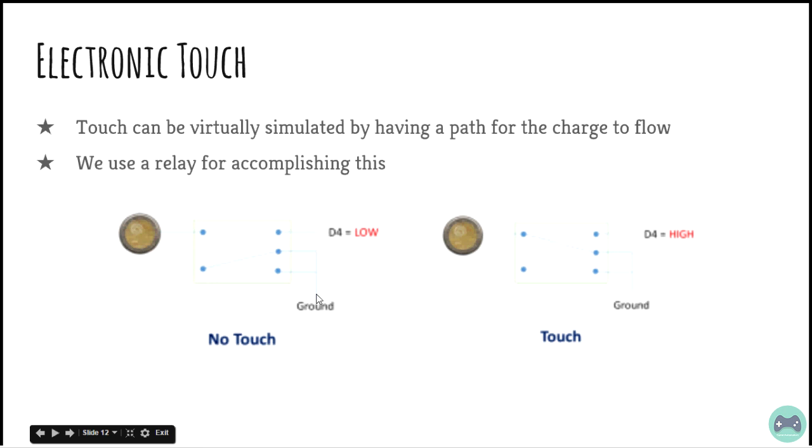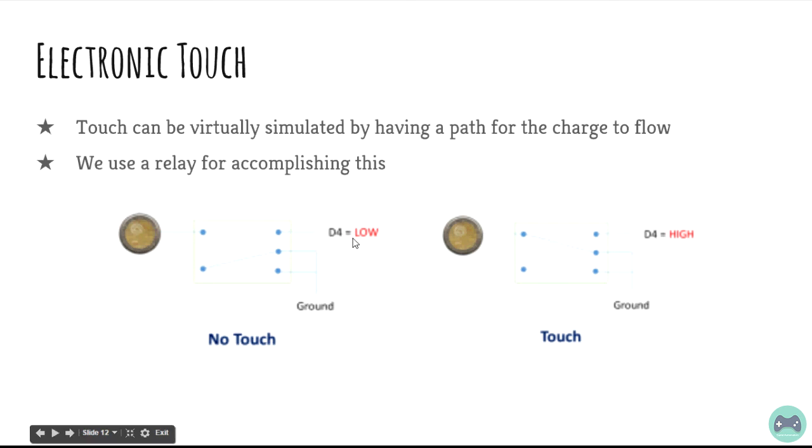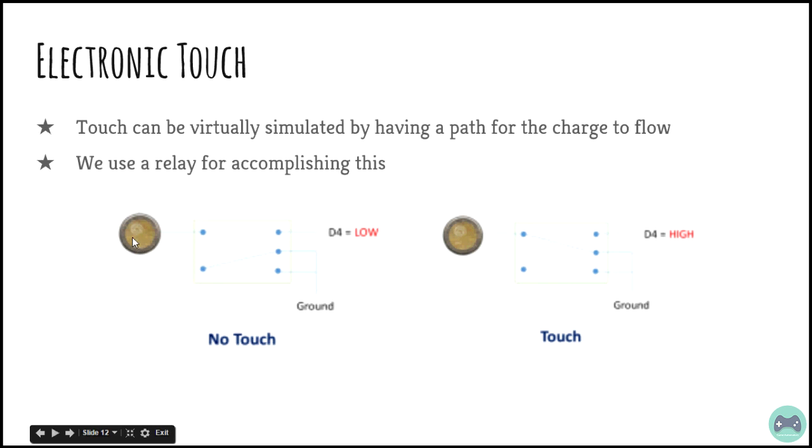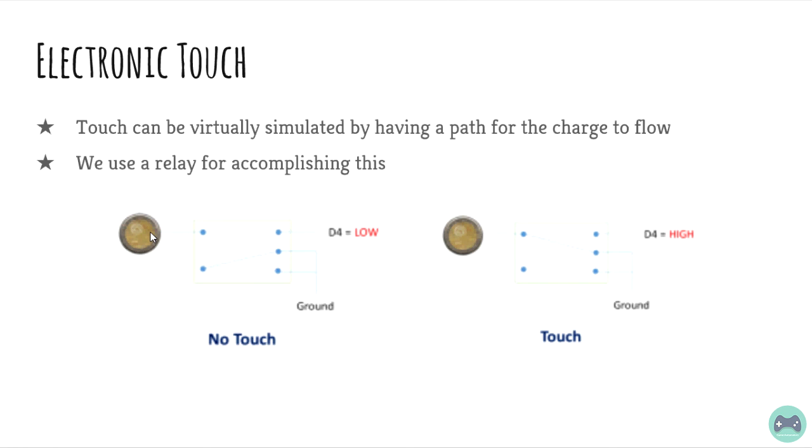When you connect this to ground and you connect a coin here, it switches between these both terminals depending on the input voltage whether it is high or low. We are using a coin at this end and this coin is supposed to be placed on the top of the screen for simulating touch. We're using a coin so that we have more surface area. Instead of a coin, you can also try some other kind of conductor or aluminum foil or anything similar.